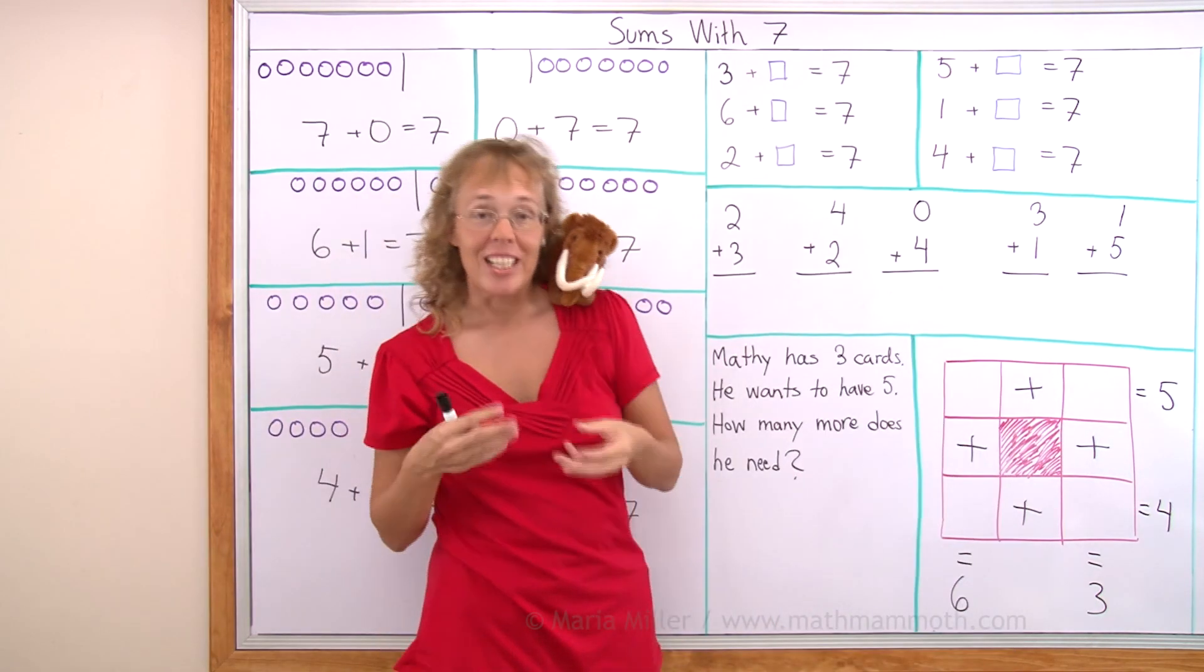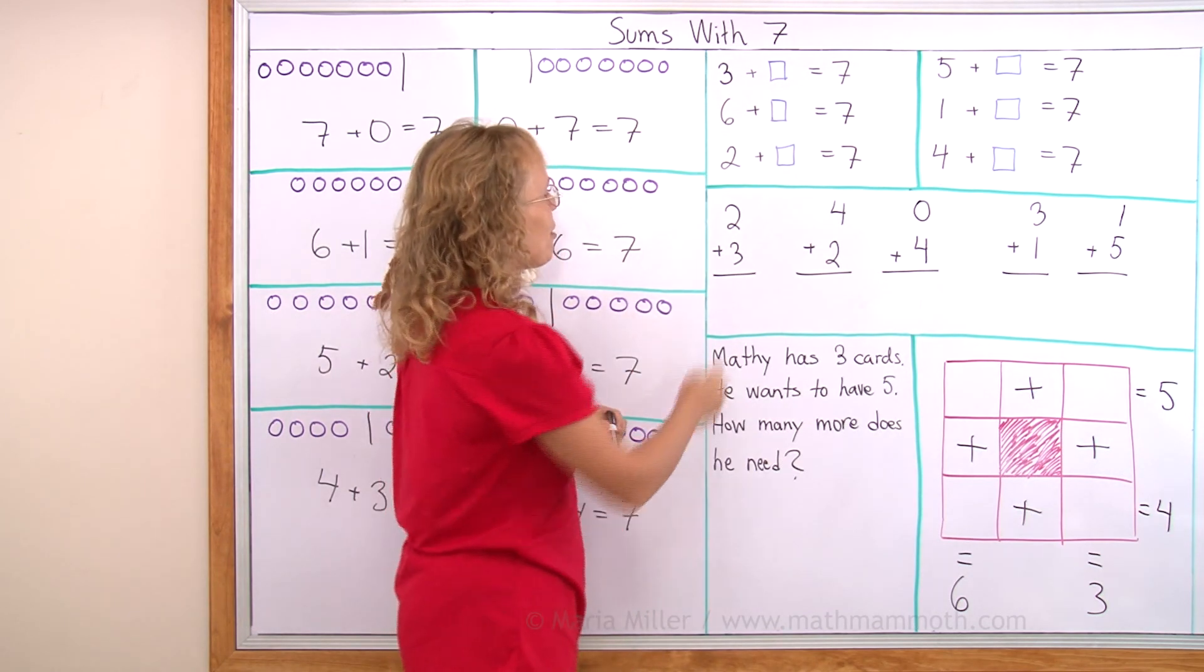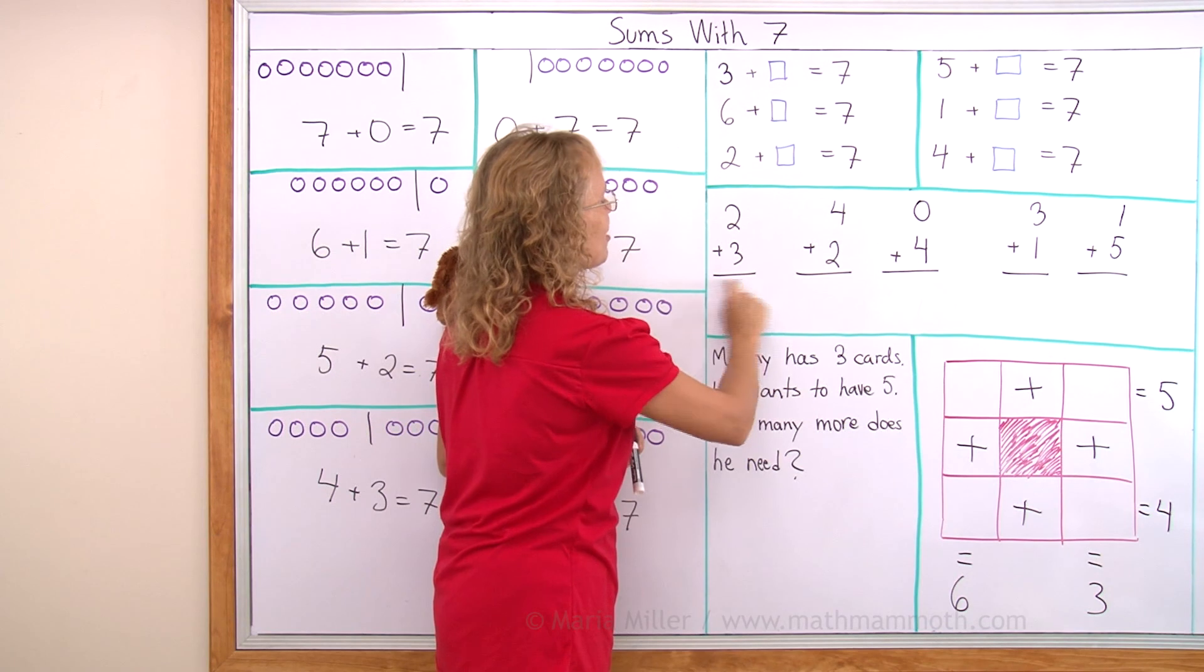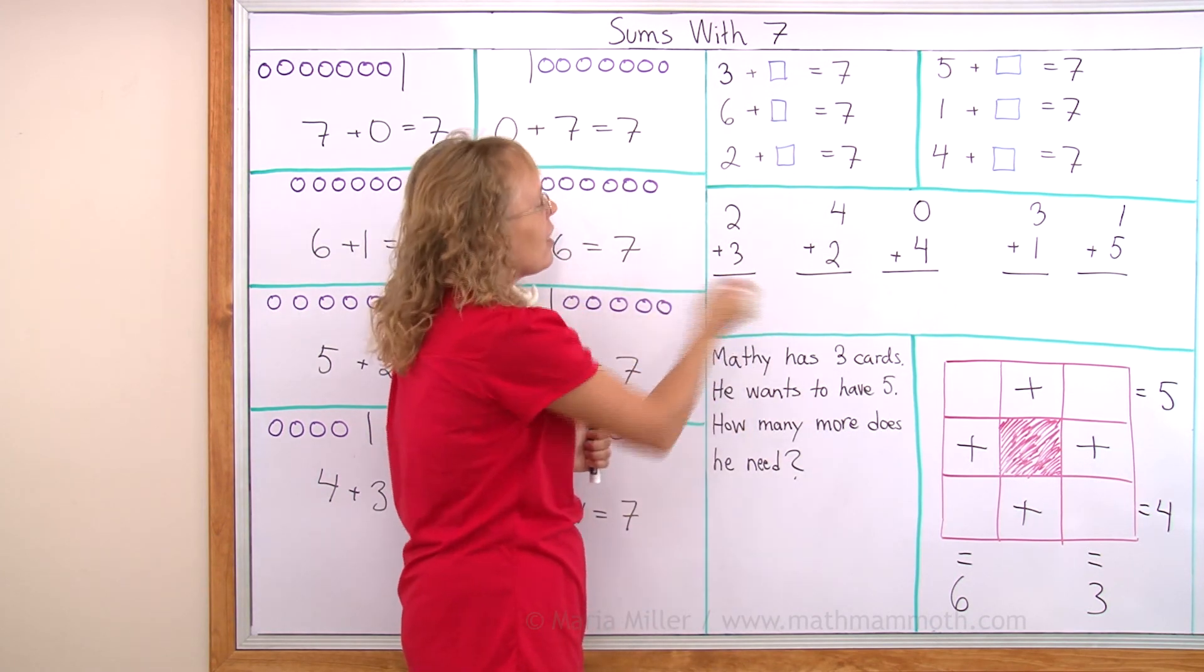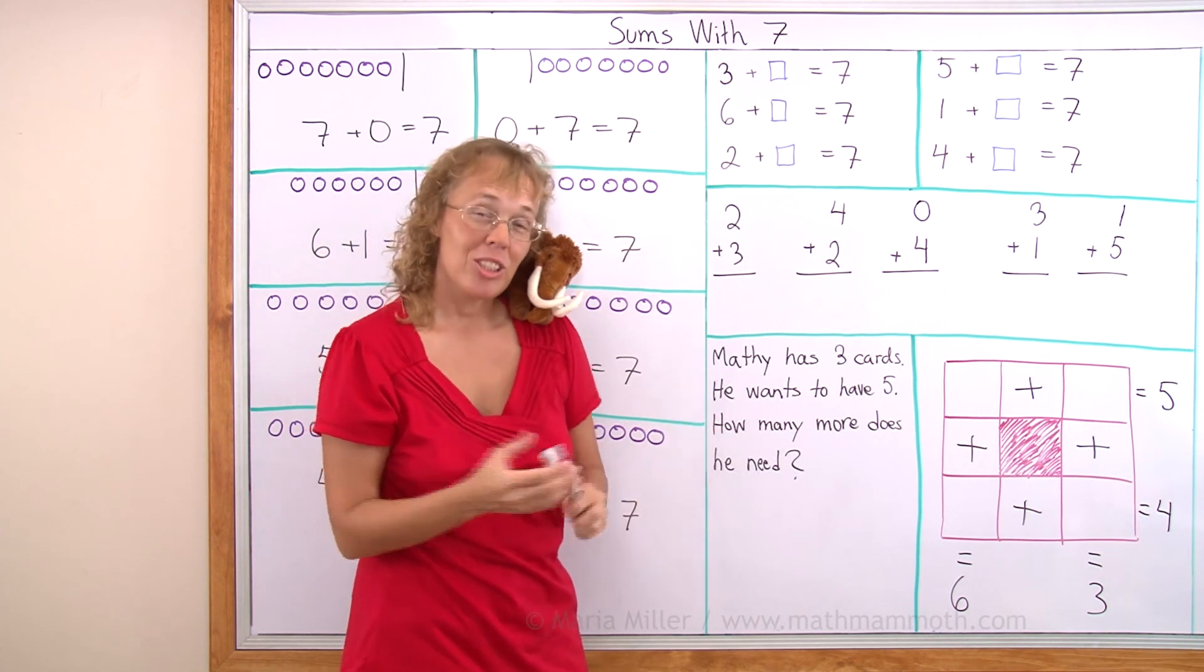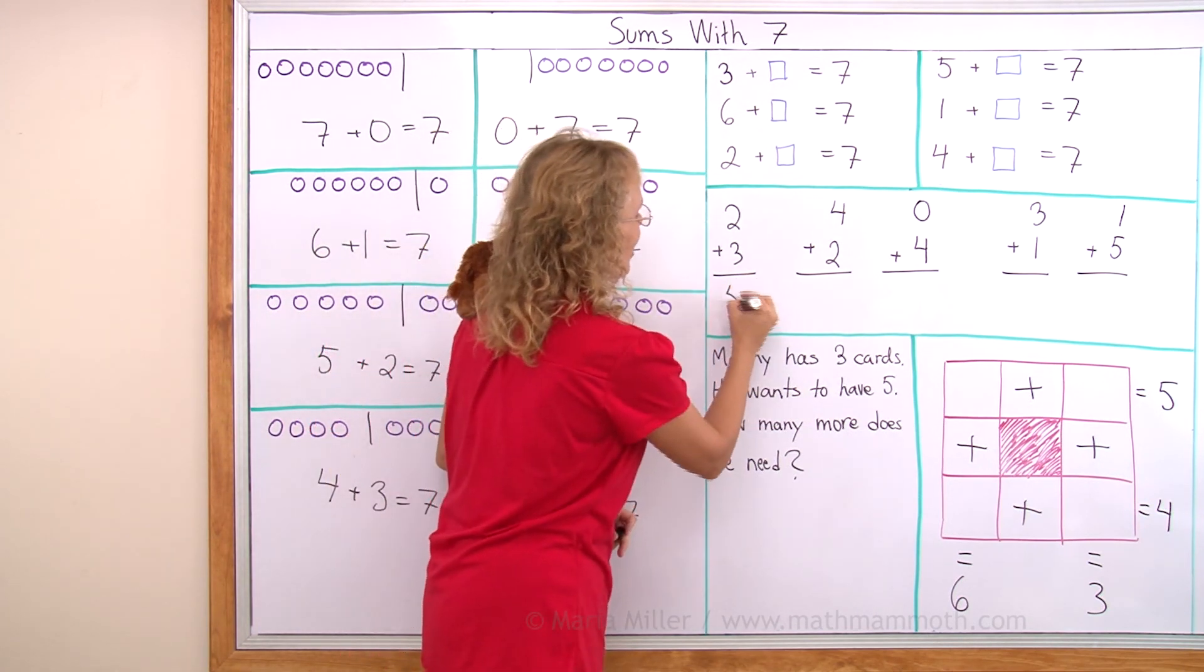Here's another way to write addition problems. We write two plus three. And this is as if your equals symbol, sort of, it's just a line. But your answer goes below the line. Two plus three, how much is it? Five. Write five here.